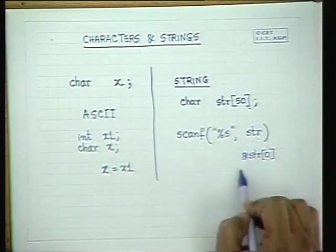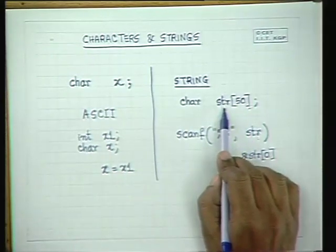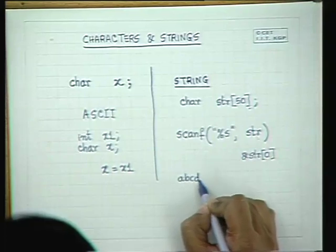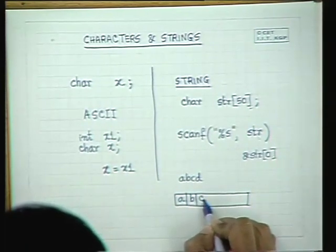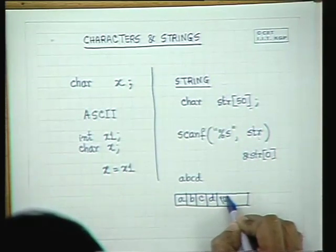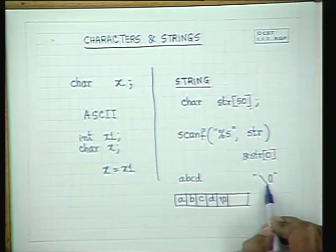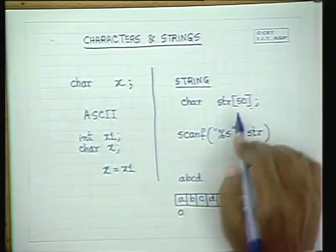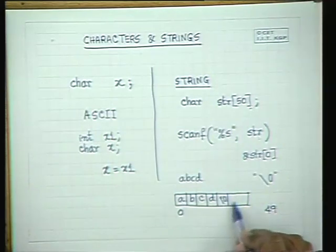The name of the string is sufficient to provide the address of the string, which is the same as &str[0]. So you give the starting address of the string, and once you give the name, the string will be read. If you write 'a', 'b', 'c', 'd', it will store them in the array: a, b, c, d — and it will end it with a special symbol called backslash-0. All strings end with this end marker. If you declare a string of size 50, make sure your string does not exceed the size, because backslash-0 must fit in.